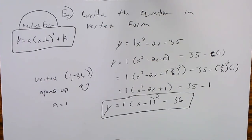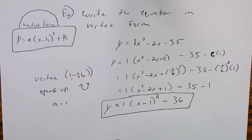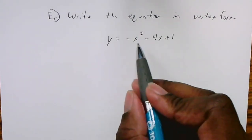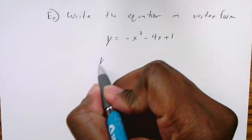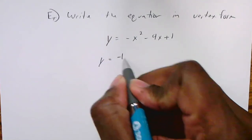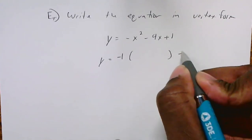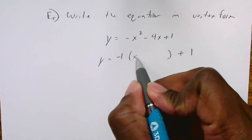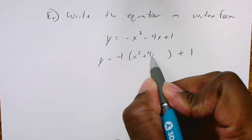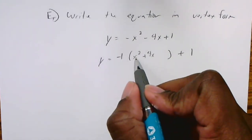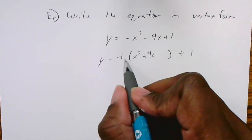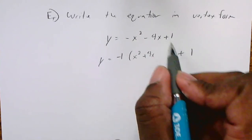I'll give you another example — pause the video and copy if you need it. Here's the new one: write this equation in vertex form. In this case the a value is negative 1, so we factor out negative 1 from all the x terms and add the constant to the end. Factoring out negative 1 from both x terms changes their signs — negative x squared becomes positive x squared and negative 4x becomes positive 4x inside the parentheses.